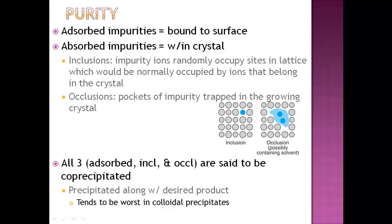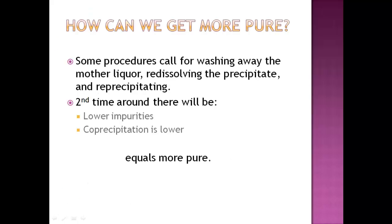There's other terms that are discussed in your book, like gathering and masking agent. I would just read over those and be able to decipher between them, but I wouldn't stress too much on those. So the big question is, how do we get more pure? And in this slide, you can see right there, a way to get more pure is actually re-dissolving the precipitate and re-precipitating the whole thing again, like I talked about before. And that second time around, you're going to have lower impurities and your co-precipitation is actually going to be lower as well, which equals more pure.